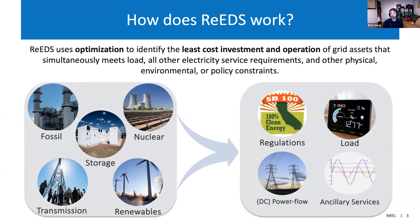Those requirements include power system operations — making sure you have enough generation to serve load at all time periods — a host of other electricity service requirements, including making sure you have enough planning reserve capacity to meet load in all the stressful periods of a year. In addition to that, providing ancillary services, so operating reserves that can help manage variability, uncertainty, or forecast errors on the grid. We also want to be able to meet environmental or policy constraints. So perhaps you have an emissions reduction target; ReEDS will find the least cost portfolio of technologies that helps you meet whatever that target is, given the availability of different technologies and their limitations.